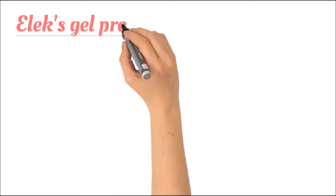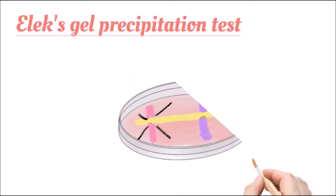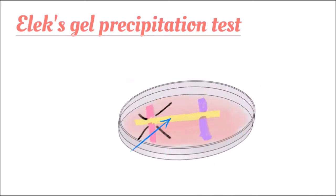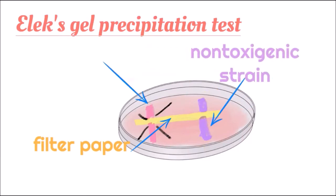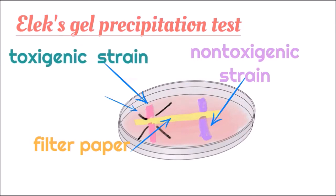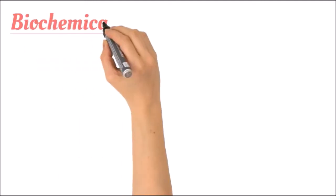The Elek Gel precipitation test is a special test to demonstrate diphtheria toxin. A filter paper is taken and placed on a serum agar. The non-toxigenic strain is streaked perpendicular to it on one side and the toxigenic strain is streaked perpendicular to it on the other side. The precipitation band forms on the side of the toxigenic strain, proving diphtheria toxin production.